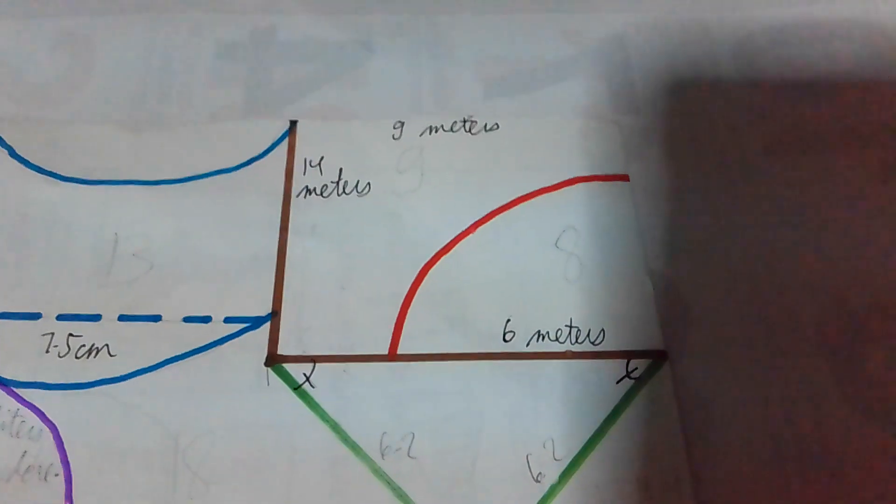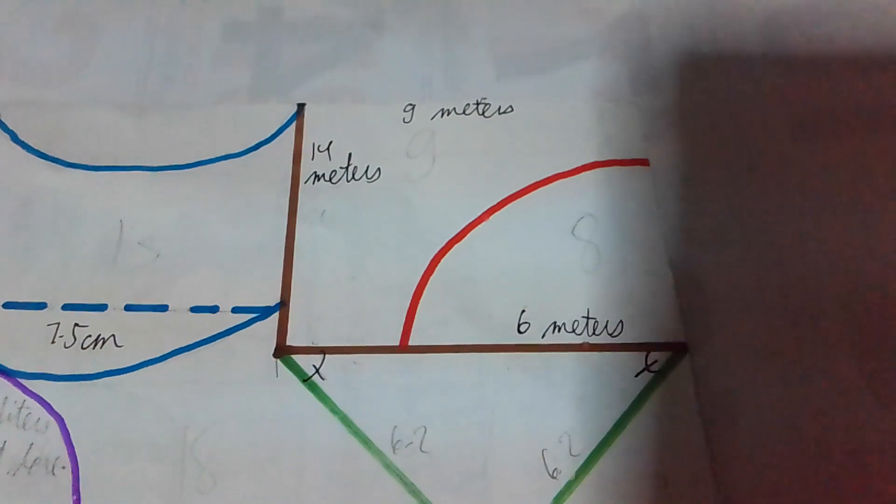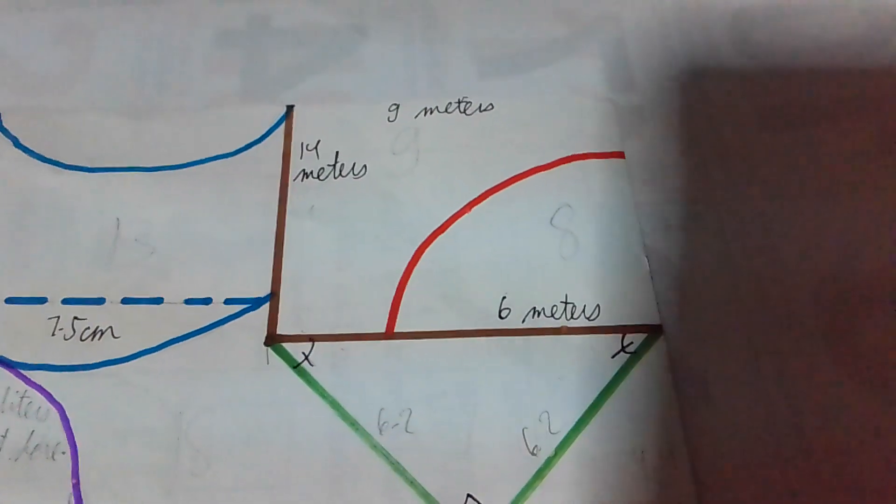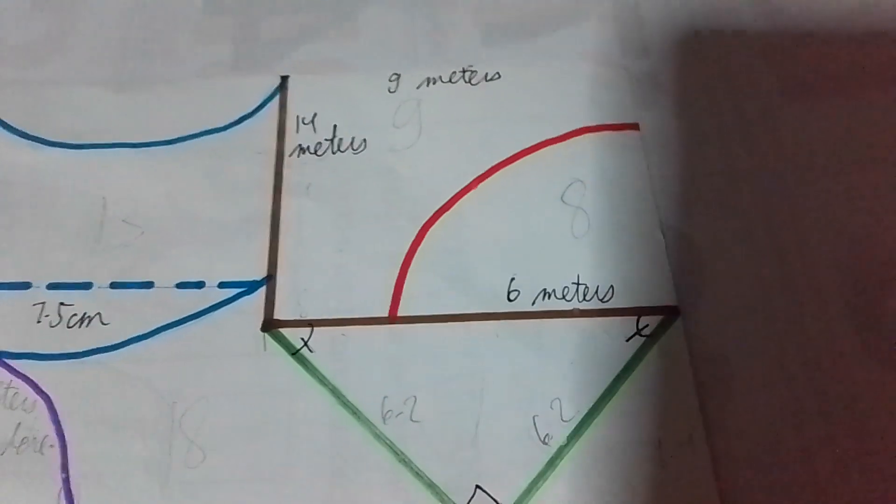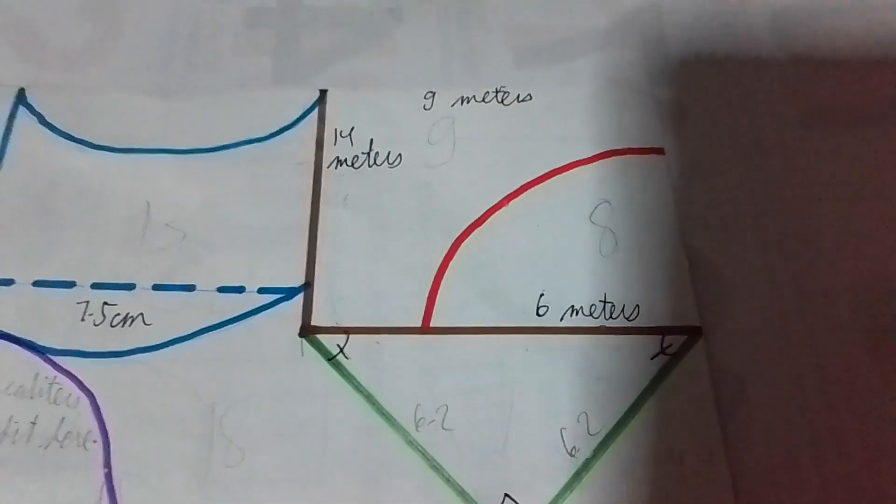To get the perimeter of this figure, it's very easy. You know what this is? It's a rectangle. Therefore, to get the perimeter of the rectangle, it's just 2L times 2W.